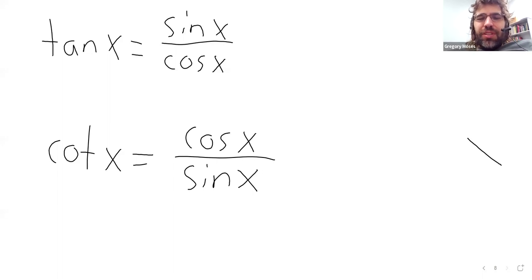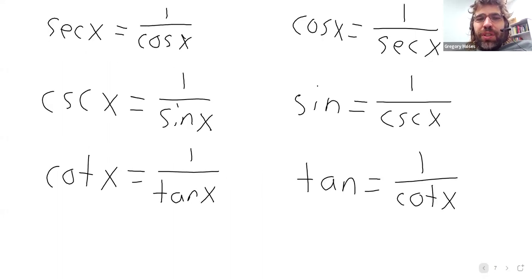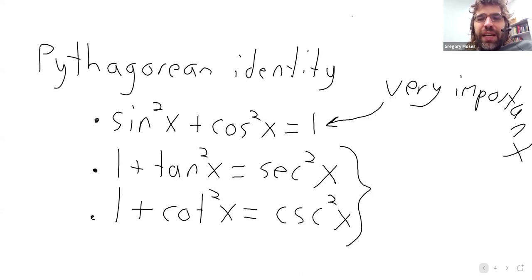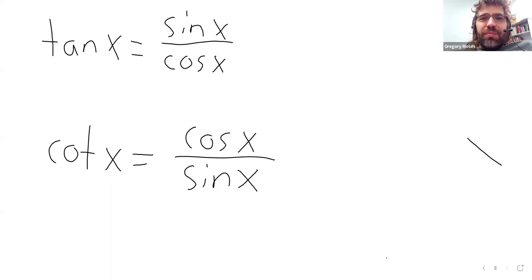So these, I believe, are all of the identities we've seen so far in this class. Yep, just double-checked, and that is correct. So in the next video, we'll finally get to the actual topic of the textbook section, and talk about verifying trigonometric identities. See you next time. Bye.